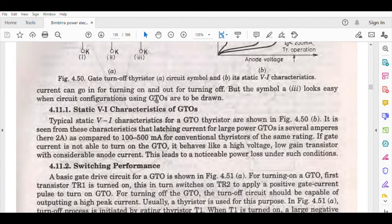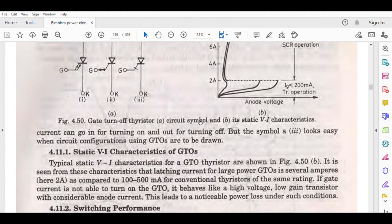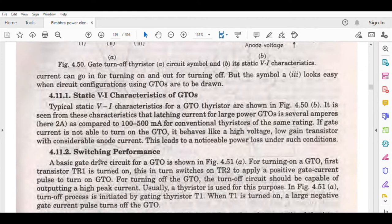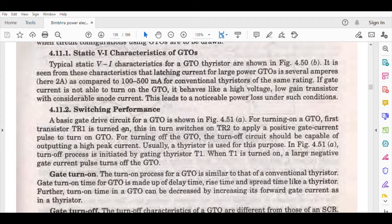Static V-I characteristics of GTO: It is seen from these characteristics that latching current for large power GTOs is several amperes, as compared to 100-500 milliamperes for conventional thyristors. If gate current is not able to turn on the GTO, it behaves like a high voltage NPN transistor with considerable anode current. This leads to noticeable power loss under such conditions.